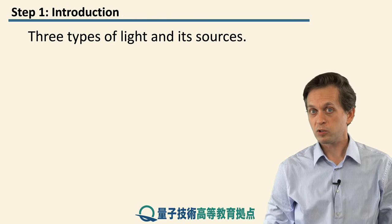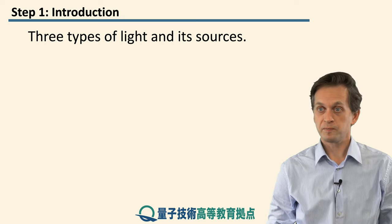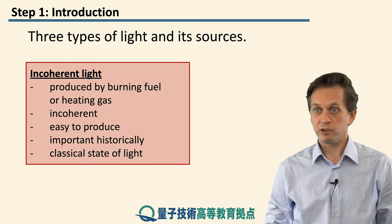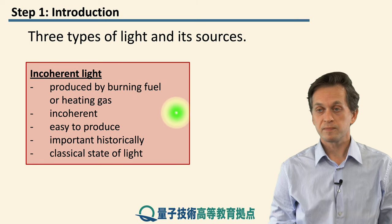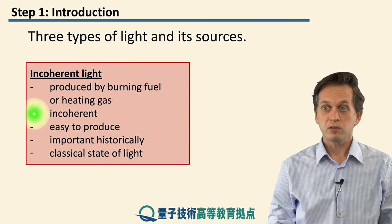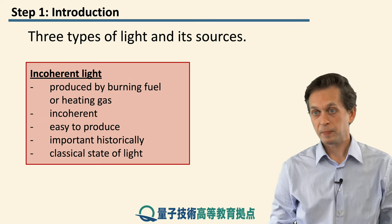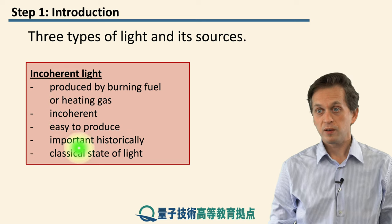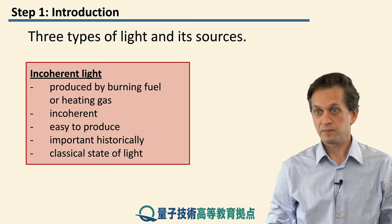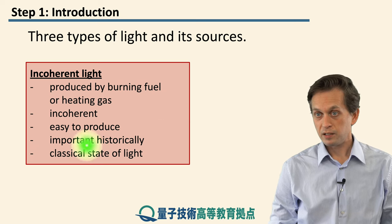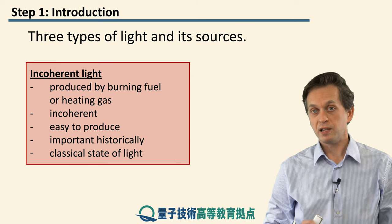In this lesson, we're going to be concerned with how to produce light. In particular, we will look at three types of light. We will begin with incoherent light — light that can be produced by burning fuel or heating gas. It's called incoherent because it doesn't have any coherence in it, which we will explain exactly. It's very easy to produce, which is why it has played a very important historical role. This type of light is known as a classical state of light, so it doesn't manifest any quantum behavior.